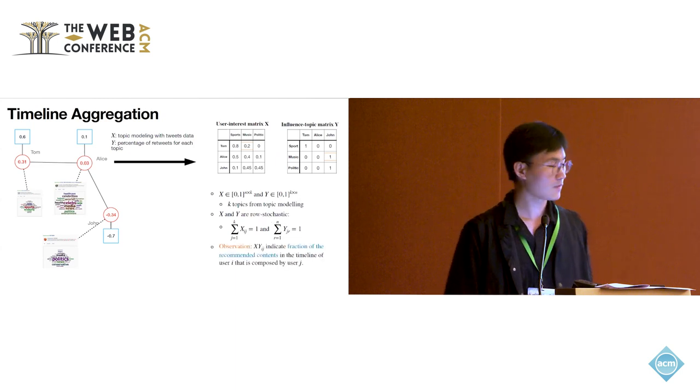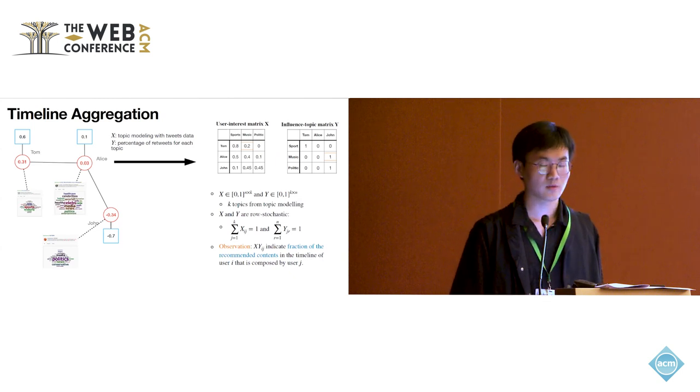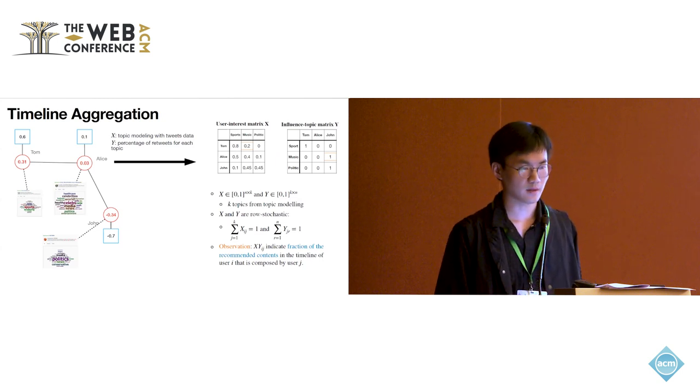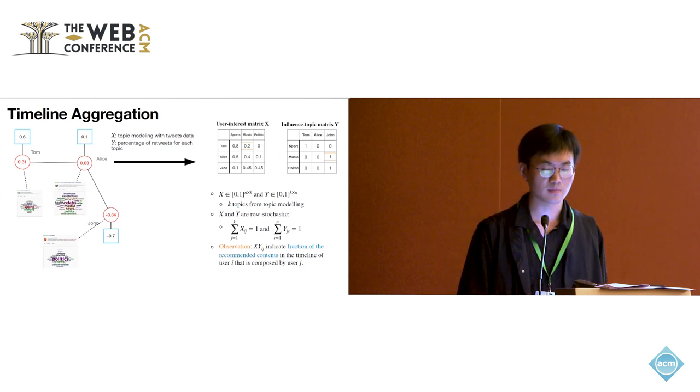Now we have the observation here. If we multiply X and Y, at the user level, XY(i,j) indicates the fraction of the content, the recommended content in the timeline of user i that is composed by user j.